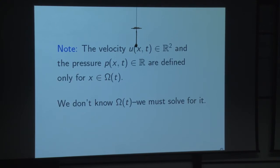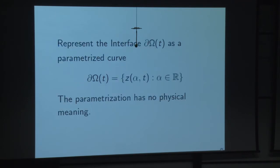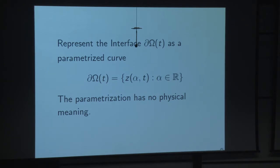A significant feature of the problem is that the functions u of x,t and the pressure p of x,t are only defined in the water region omega of t, and we don't know what the water region is. It's moving with time, and part of the problem is to find the region — so it's a free boundary problem. We represent the interface as a parametrized curve z of alpha, t. For fixed t, alpha maps to z(alpha,t) is a parametrization of the curve, but the parametrization has no physical meaning and can be changed without changing the interface.